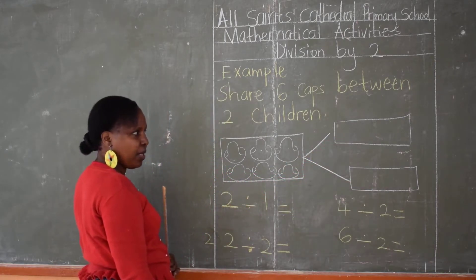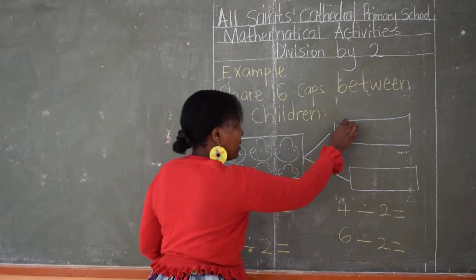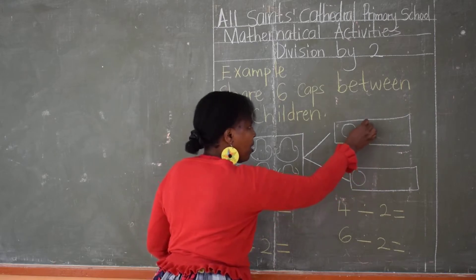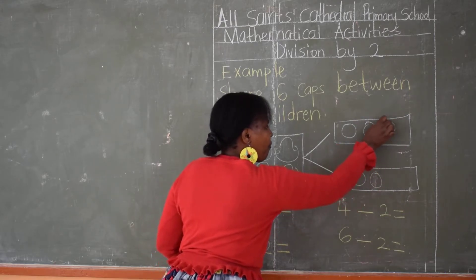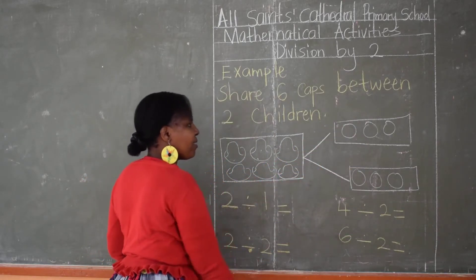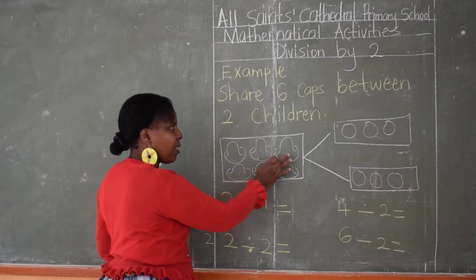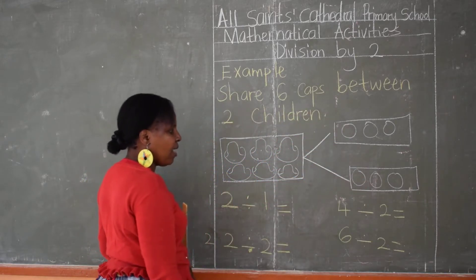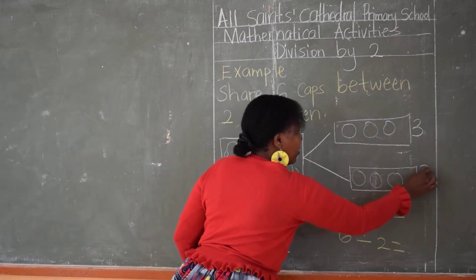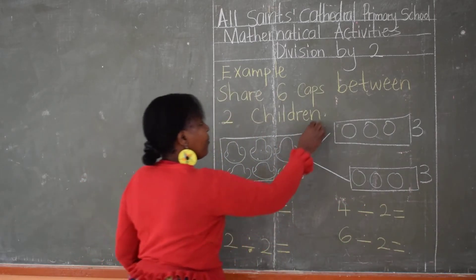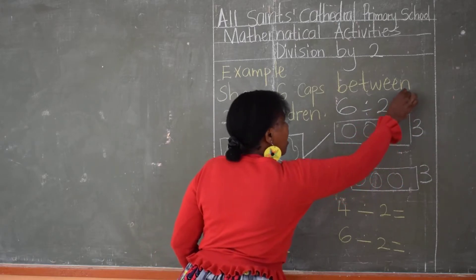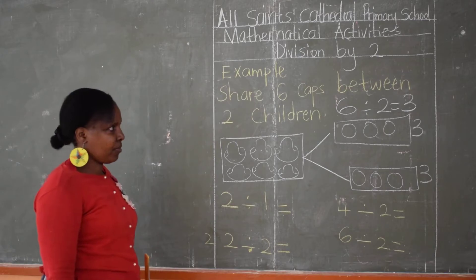I'm going to share the caps equally. I will count one, two, three, four, five, six. Just assume that these are my caps. I've shared six caps equally between two children. And each child has how many now? Each child has three caps. So, six shared equally between two children, my answer will be three.